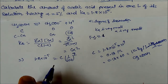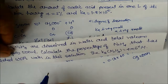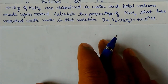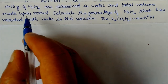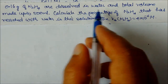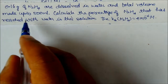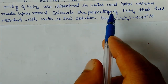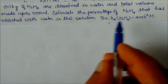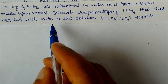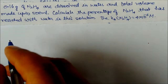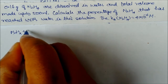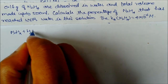Now the second question: 1.6 grams of hydrazine is dissolved in water and total volume made up to 500 mL. Calculate the percentage of hydrazine that has reacted with water in this solution. Kb is given as 4×10⁻⁶.